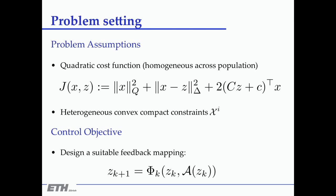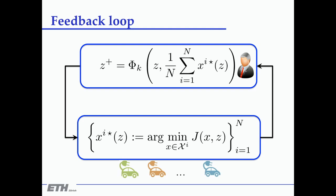The controller at time k+1 is a function of what you told them at time k plus the aggregate that came out; you give them this new information and ask them to compute the solution again. It's a control scheme — an iteration: they have some information, compute an optimal solution, you perform the aggregation, and decide what to tell them now. It's a feedback loop.